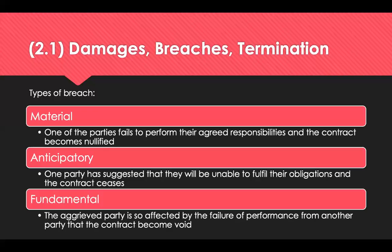Termination of the contract can be through a breach, performance, prior agreement, rescission or completion. A breach is where one party fails to perform their obligation. Performance is where one party is unable to carry out the agreed actions. Prior agreement is where both parties agree and this conforms with reasons stated in the contract. Rescission is where one party has misrepresented themselves or conducted an illegal act. Or through completion where the contract has been successfully concluded.